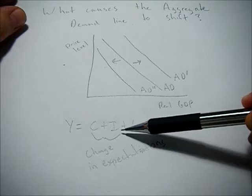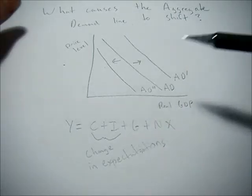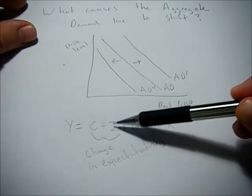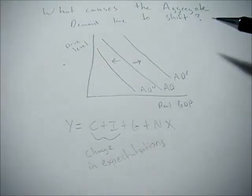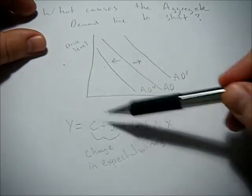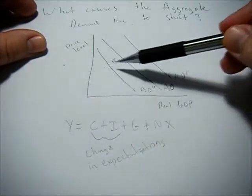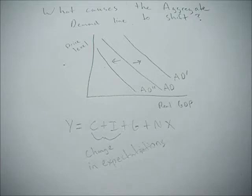Same with firms. If firms have a positive outlook on the future, they'll invest more. I goes up, Y goes up, aggregate demand goes up. Likewise, if they think bad things are going to happen, one of these goes down, Y goes down, aggregate demand decreases or shifts left.